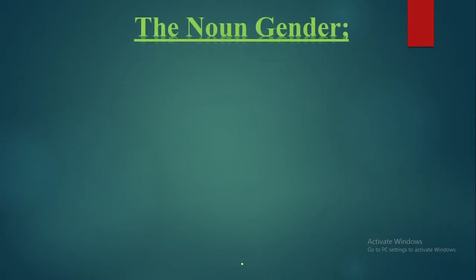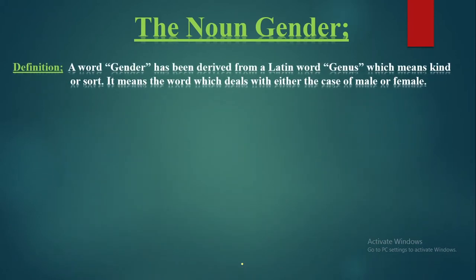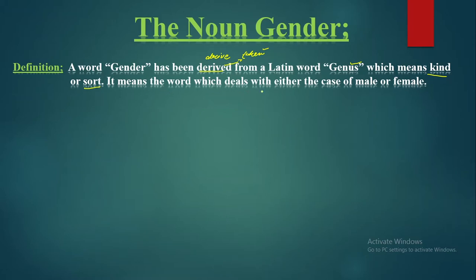Let's begin the topic which we are going to discuss — that is noun gender. Let's start with its definition. The word 'gender' has been derived from a Latin word. 'Derived' means taken from. So the word gender has been derived from the Latin word 'genus', which means kind or sort — that is, which deals with the case of male or female.